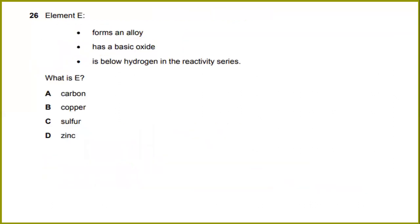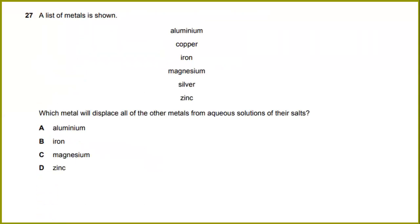What is the problem? Element E has the properties of forms an alloy, has a basic oxide, and is below hydrogen in the reactivity series. What is E? E is actually copper. A list of metals is shown: aluminum, copper, iron, magnesium, silver, and zinc. Which metal will displace all of the other metals from aqueous solutions of their salt? The answer would be magnesium. Magnesium, being more reactive than aluminum, will be displaced from its salt solution.